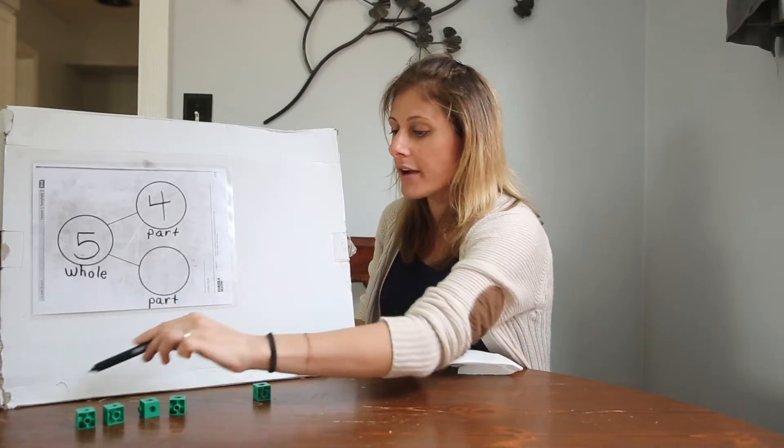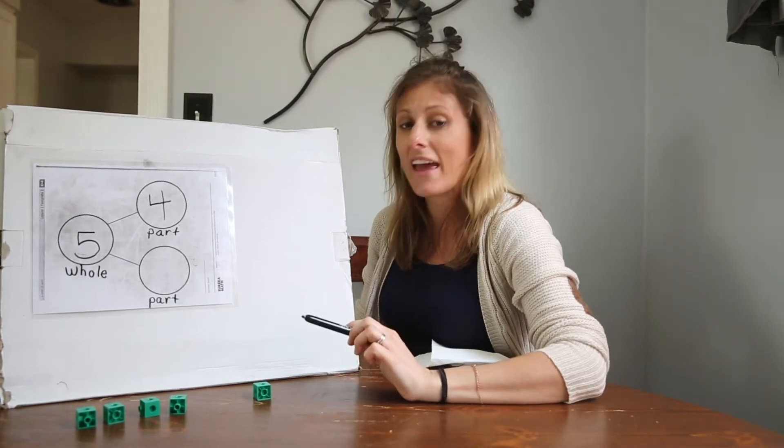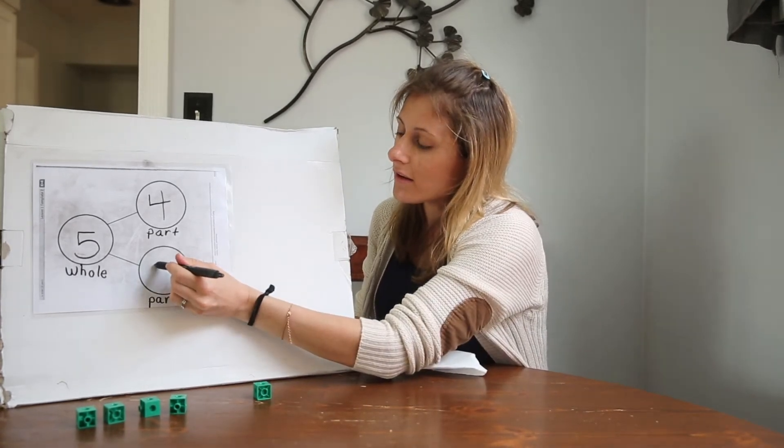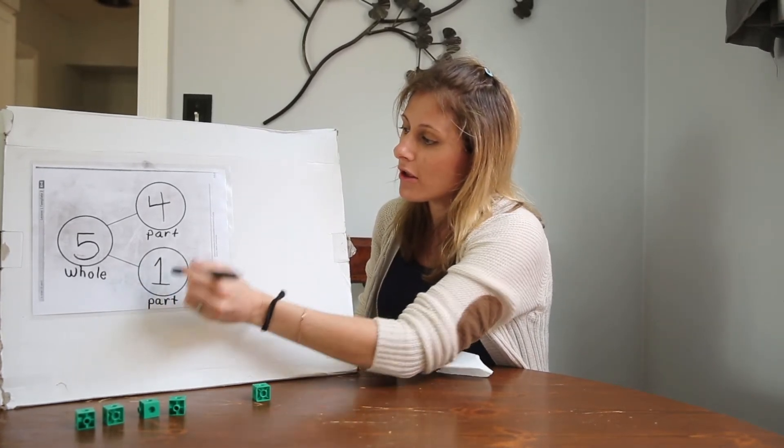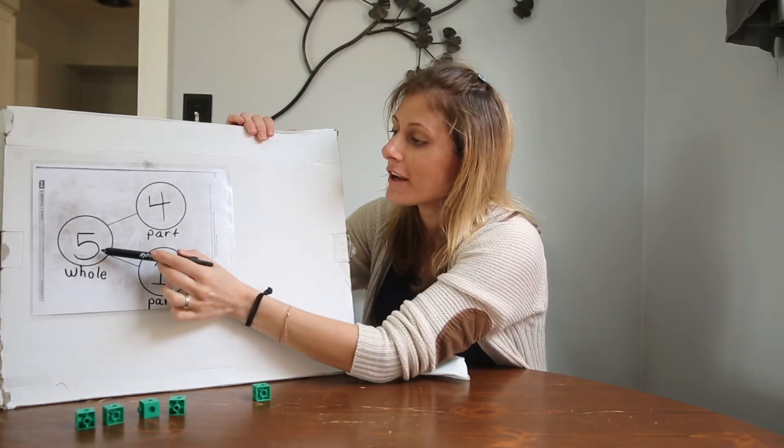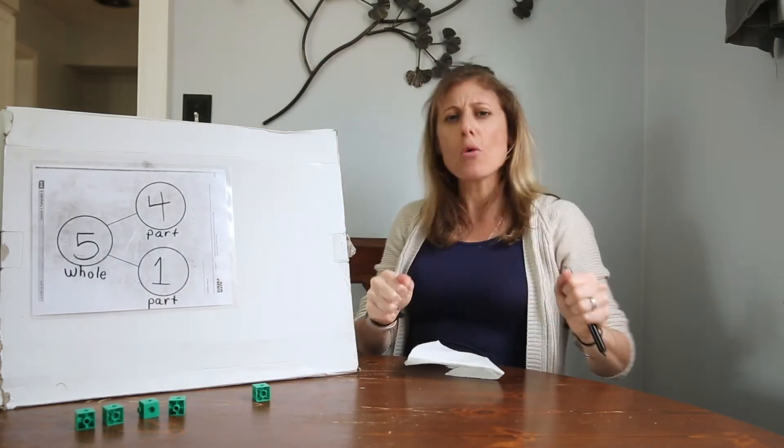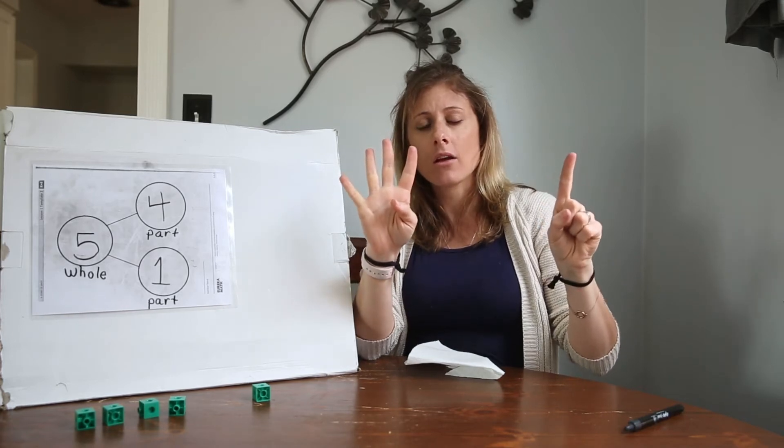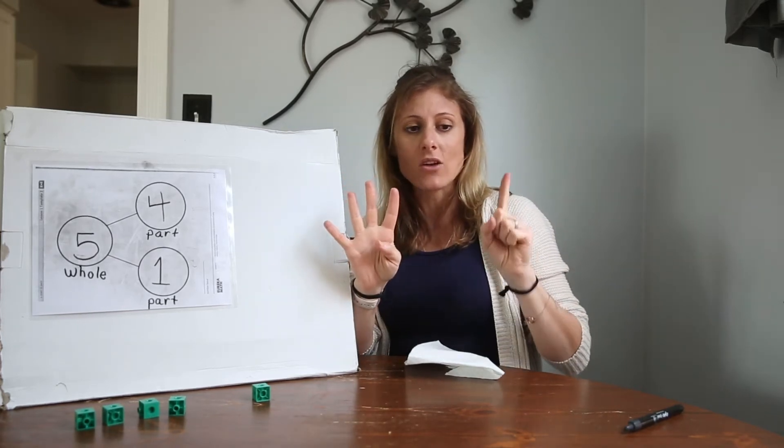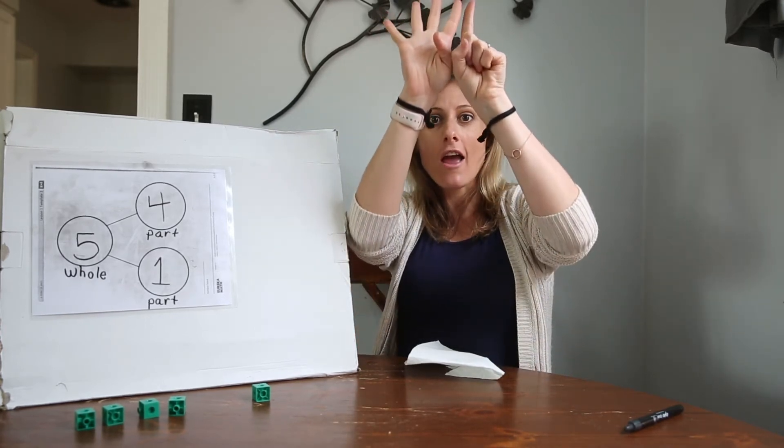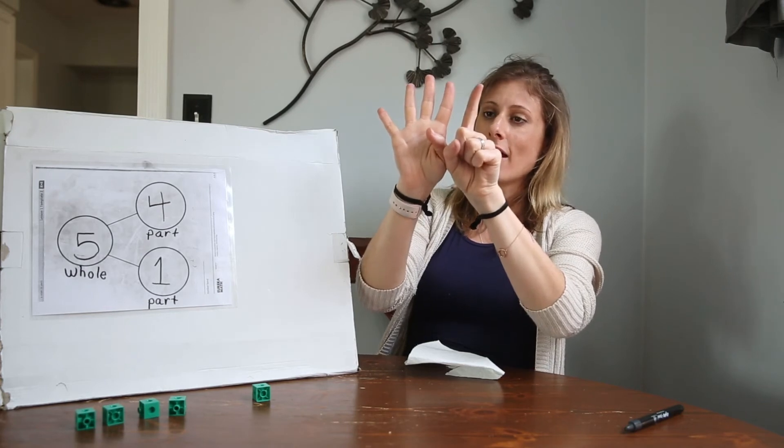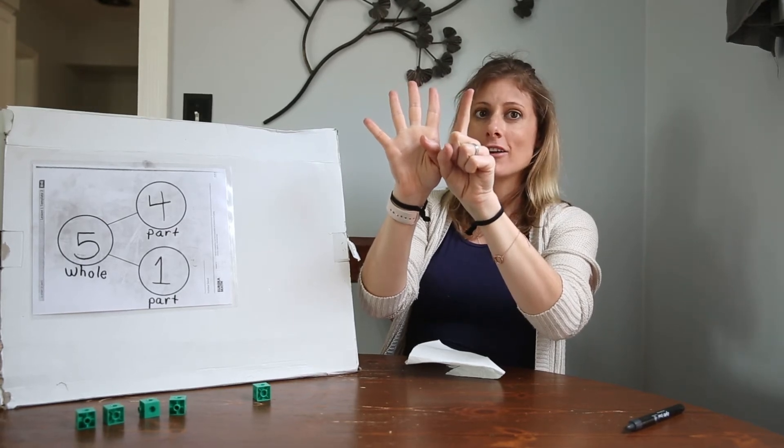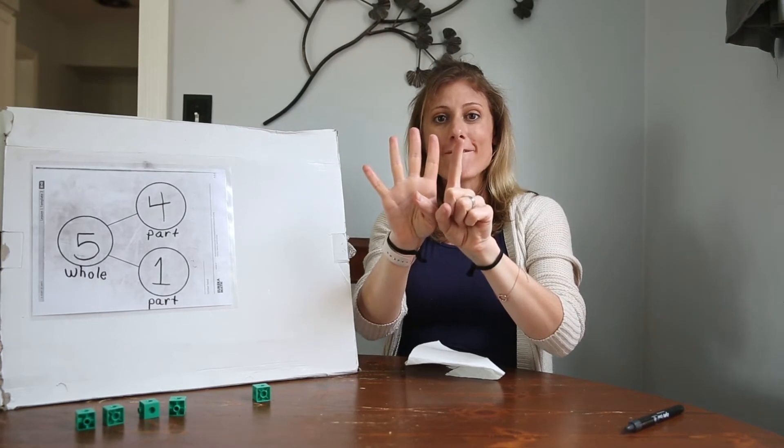But now I need to find out how many is in the other part. I already counted this part. Now I'm gonna count this part. Count with me. One. Hold on a second. I'm gonna draw one in this part. Wow, so my whole number is five and I broke it down into four and one. So wait a minute. If I have four and one and I put them back together, how many do I have? One, two, three, four, five.